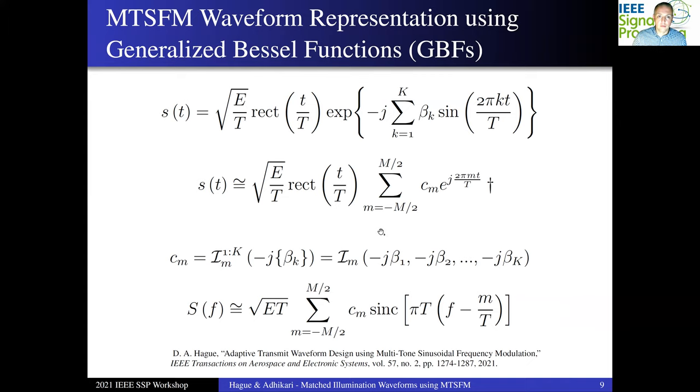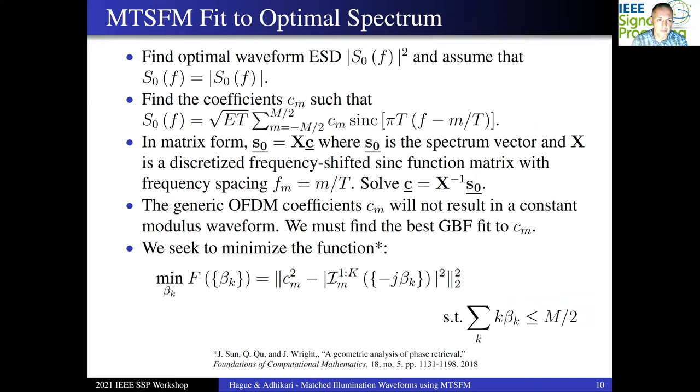Now the challenge is, how do we design the waveform spectrum to fit that ideal MI waveform ESD shape? Here's a heuristic method that we came up with that attempts to do just that. The first step is we find the optimal waveform ESD shape. That's the magnitude square of this S naught of F that we're calling it. We're going to assume that S naught of F is simply the square root of the ESD. We have no phase information, so we will not impose any phase structure into the problem. The next step is to find the generic set of OFDM coefficients C sub M that fit to that ESD shape. In matrix form, if we discretize the problem, we could express this vector S naught in terms of some matrix X times the coefficient vector C. Matrix X is a discretized frequency-shifted sinc function matrix with frequency spacing M over capital T. If we sample at Nyquist and use this frequency spacing, this matrix X is square and the columns are orthonormal. So we can simply solve this procedure via the matrix inversion.